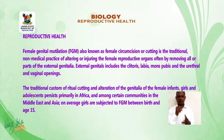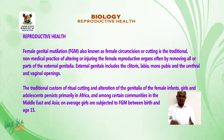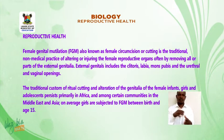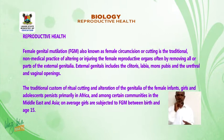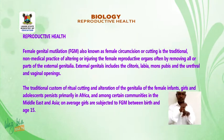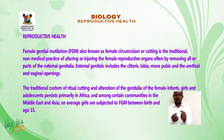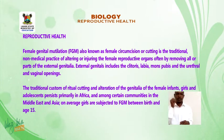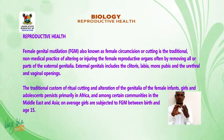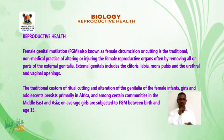Reproductive health: Female genital mutilation (FGM), also known as female circumcision or cutting, is a traditional non-medical practice of altering or injuring the female reproductive organs, often by removing all or parts of the external genitalia. External genitals include the clitoris, labia, mons pubis, and the urethral and vaginal openings. This traditional custom of ritual cutting and alteration of the genitalia of female infants, girls, and adolescents persists primarily in Africa and among certain communities in the Middle East and Asia.